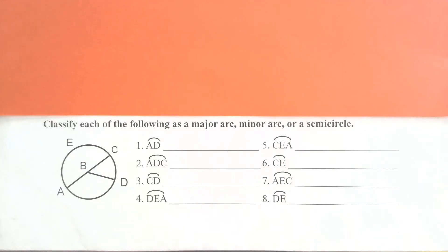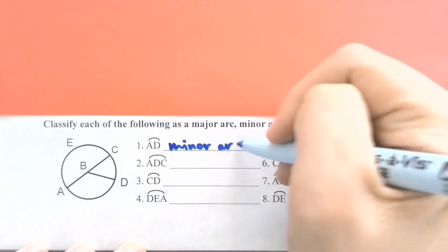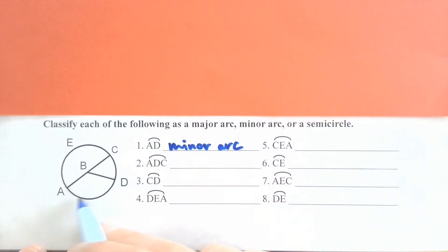Looking at this next example, we're just trying to decide if each arc is a major, minor arc, or a semicircle. Looking at our first arc, AB. First, we just know that since they labeled it with two letters, it has to be a minor arc. But I also want you to go through the motions of finding it in the circle so that you know we're talking about this arc right here.